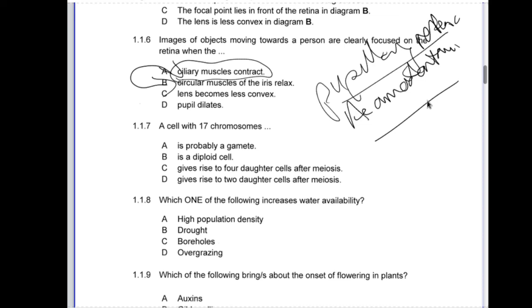Next question 1.1.7: a cell with 17 chromosomes. That's not an even number, that's an odd number. Remember we have diploid chromosomes in the normal body cell, so this has to be a gamete because in any normal body cell I would have an even number or diploid number of chromosomes. So the correct answer here is A.